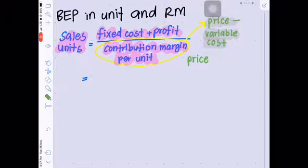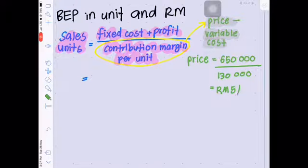From this question, you will get price per unit when you divide total sales, which is 915,000 ringgit, with selling units, which is 130,000 unit. Then you will get RM5 per unit.